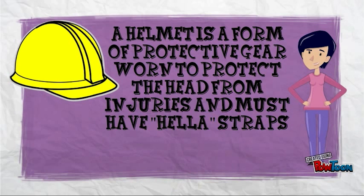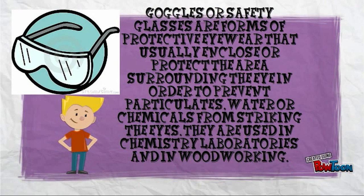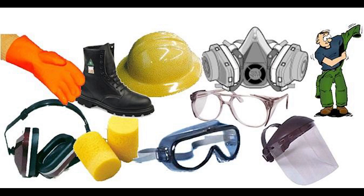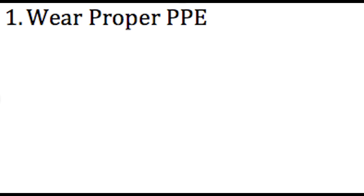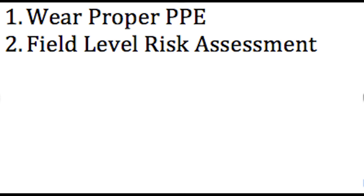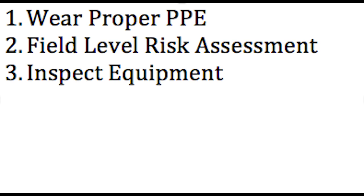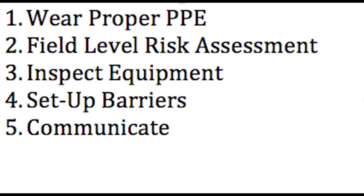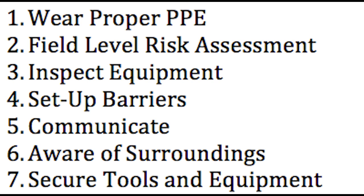Personal protective equipment should be worn at all times — for instance, steel toe boots will prevent foot injuries while hard hats will prevent head injuries. However, PPE on its own is never enough. The solution involves several steps: one, make sure you are wearing your PPE at all times; two, before starting work complete a field level risk assessment; three, inspect all equipment you will be using; four, set up a barrier around the area of work; five, communicate with workers around you; six, be aware of surroundings such as placement of materials to avoid trips or slips; seven, make sure all tools and materials are secured before going up.